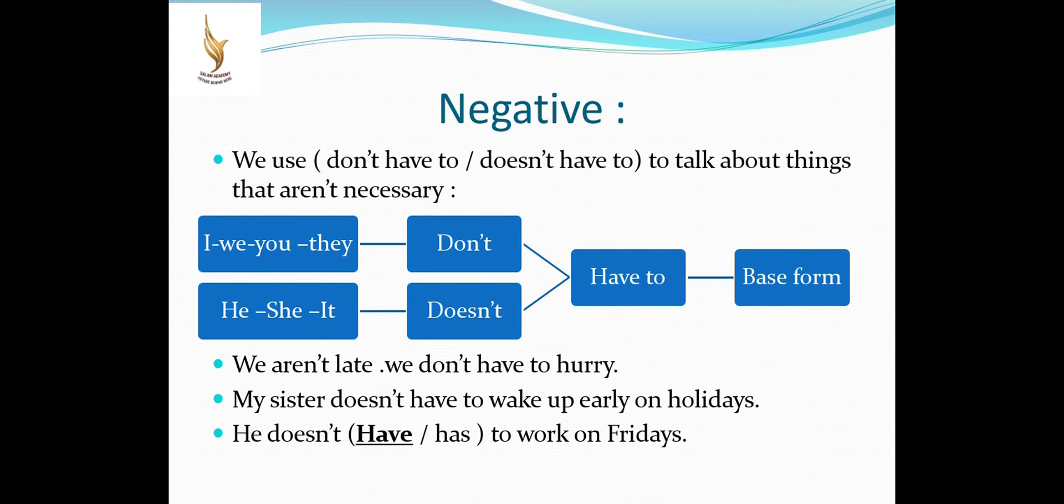Don't and doesn't have to. We use don't or doesn't have to when we talk about things that aren't necessary. Something that isn't very important. So, you don't need to do it. So, we put the subject and then don't or doesn't followed by have to and the base form. We aren't late, so we don't have to hurry. My sister doesn't have to wake up early on holidays. He doesn't have to work on Fridays. Sure, he doesn't have to wake up.